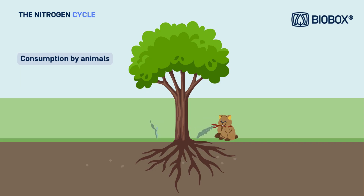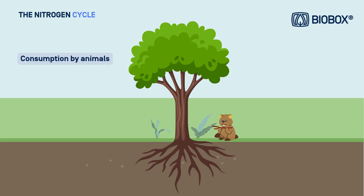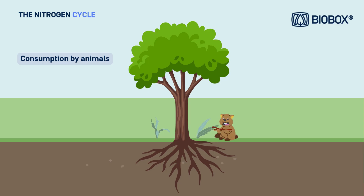The next step is consumption by animals. However, unlike plants, animals cannot absorb nitrogen directly from the soil, so they obtain it by eating plants, fruits, or other animals. The nitrogen in plant proteins becomes part of the animal's body, including its tissues, muscles, and biological systems.